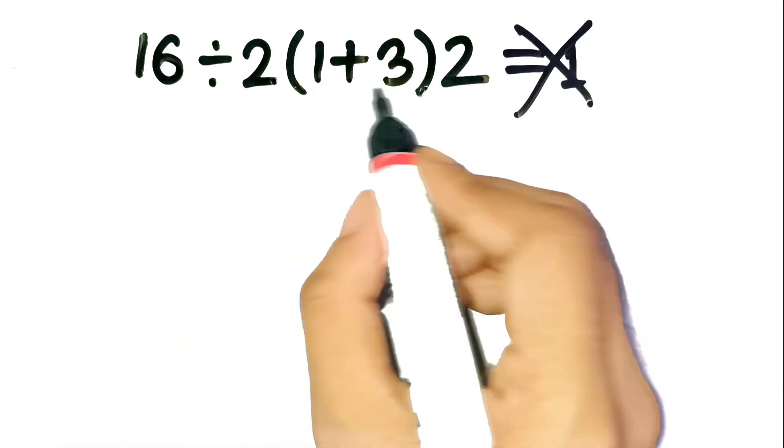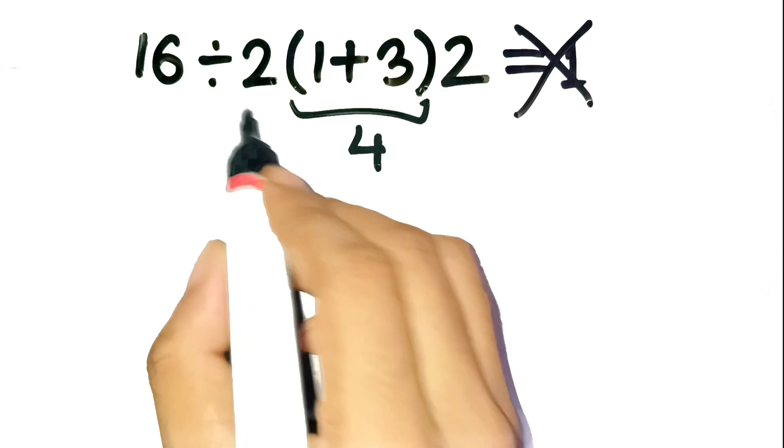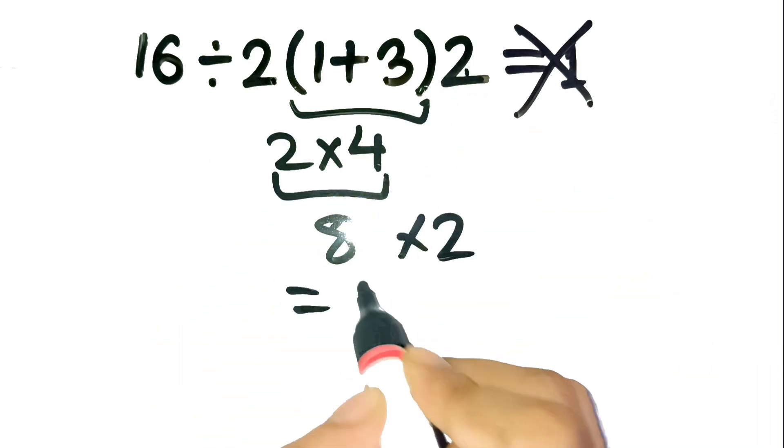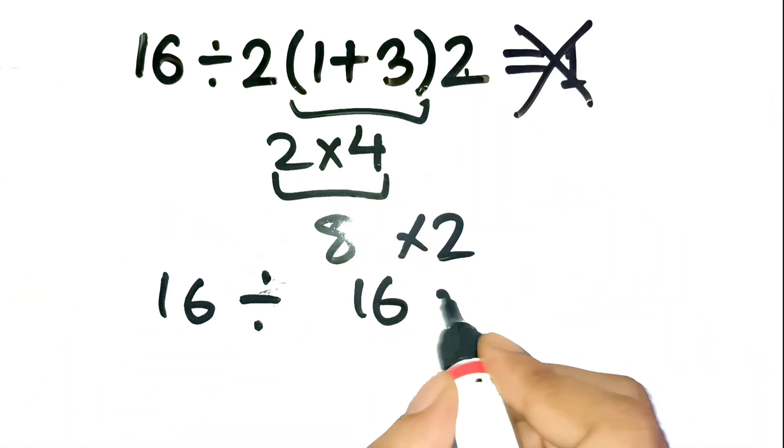They go, okay, inside the parenthesis, one plus three is four. Then two times four is eight, and eight times two is 16. So 16 divided by 16 equals one.